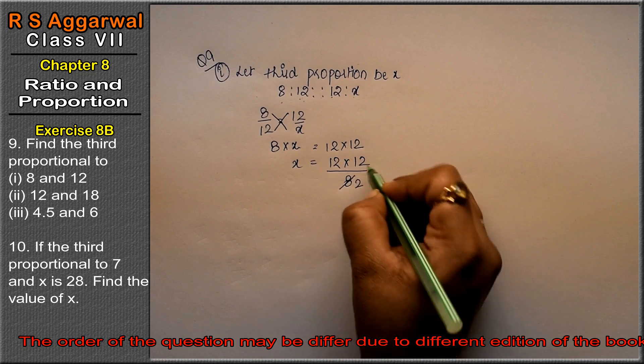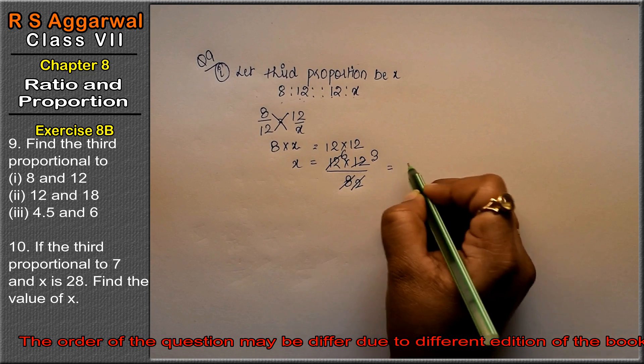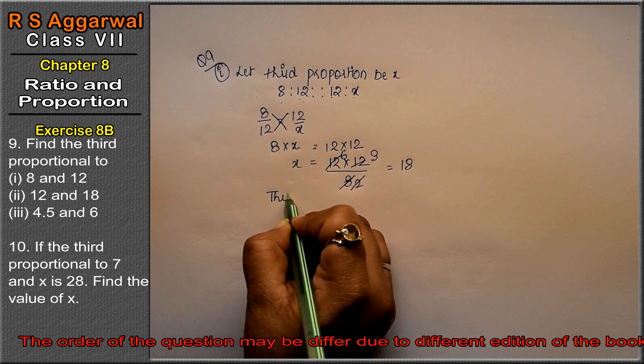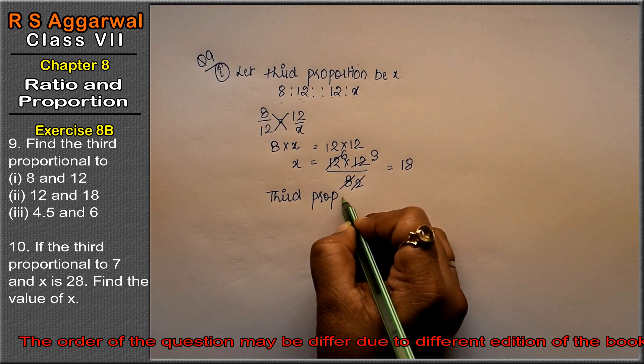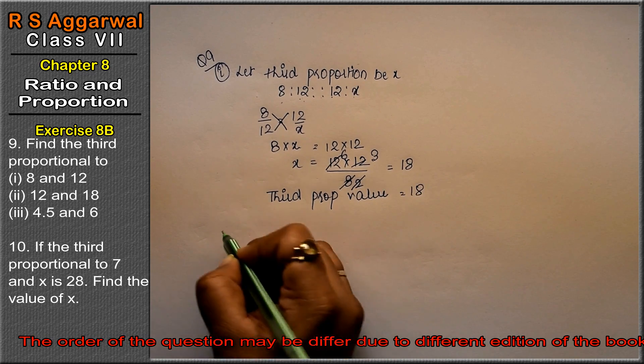4 twos are 8, 4 threes are 12, 2 ones are 2, 2 sixes are 12. So 3 sixes are 18. So third proportion equals to - the value equals to 18.